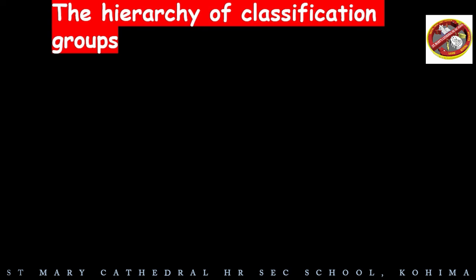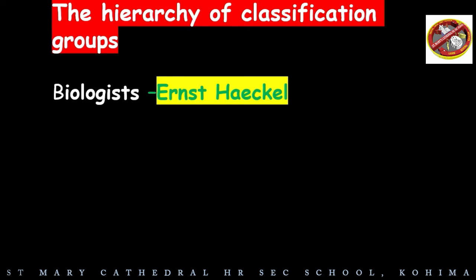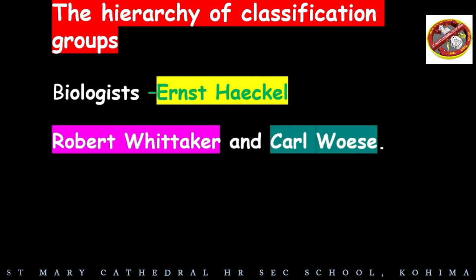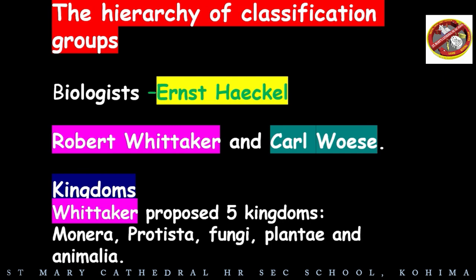The hierarchy of classification groups: biologists such as Ernst Haeckel, Robert Whittaker, and Carl Woese tried to classify all living organisms into broad categories called kingdoms. Whittaker's classification proposed five kingdoms: Monera, Protista, Fungi, Plantae, and Animalia.